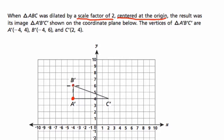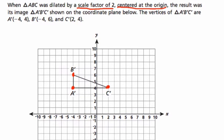And the result was the image we see below, right? This image A prime, B prime, C prime. The vertices are negative 4, 4, negative 4, 6, and 2, 4. So we're finding what are the coordinates of the original triangle? What are the coordinates of the vertices of ABC?